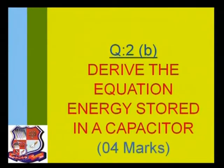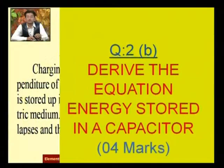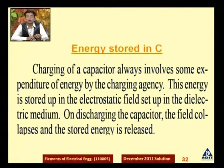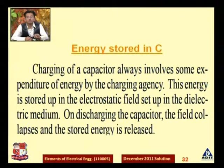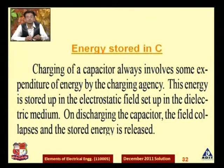Question 2B is a derivation question: you have to derive the equation for the energy stored in a capacitor. This is a 4-mark question in which you have to derive how much energy is stored by a capacitor when charging or discharging. Charging a capacitor always involves some expenditure of energy by the charging agency — you can put any voltage source as the charging agency.